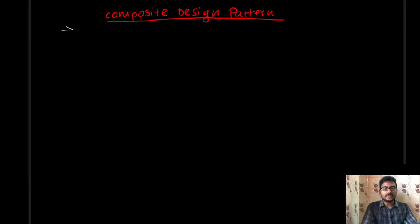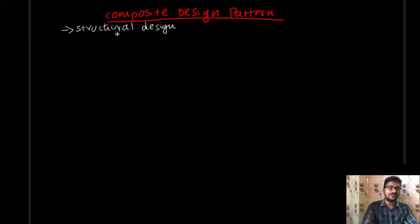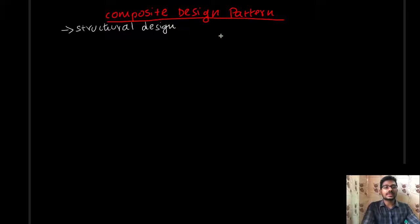First, the composite design pattern follows the structural category. We have already seen the categories of design patterns: Structural, Creational, and Behavioral. This is a structural design pattern. When you use the composite design pattern, you can represent objects in tree structures.